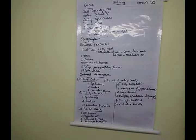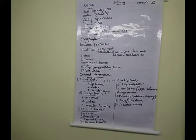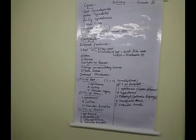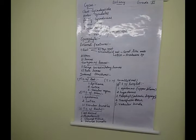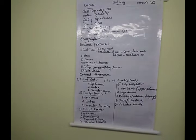We are going to learn about the external features of the sporophyte and the internal structure of the sporophyte. The stem region has a columnar stem bearing a crown-like appearance of spirally arranged pinnately compound leaves. These are called pinnately compound leaves arranged in a spiral manner.